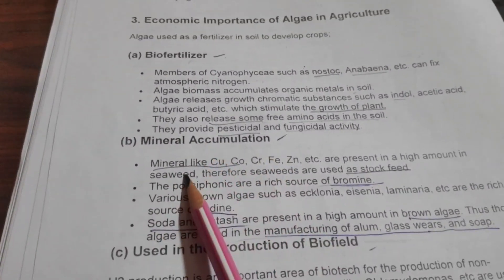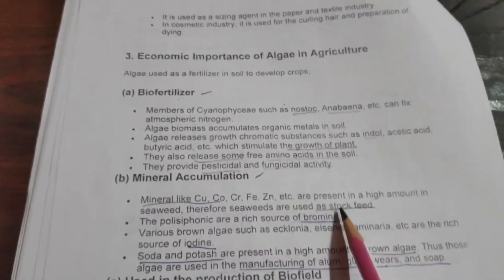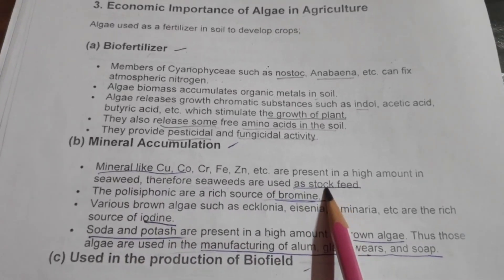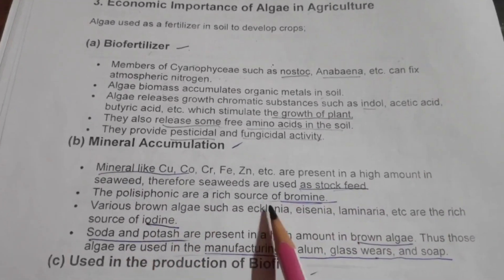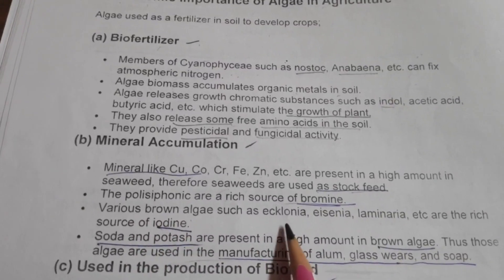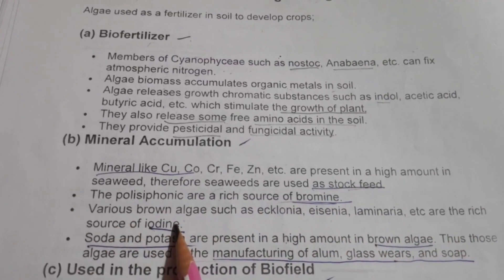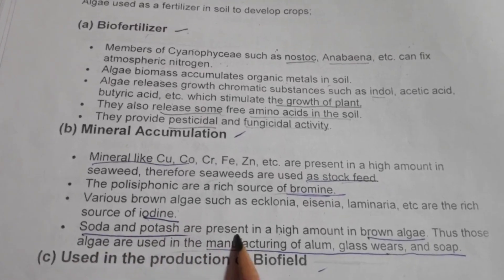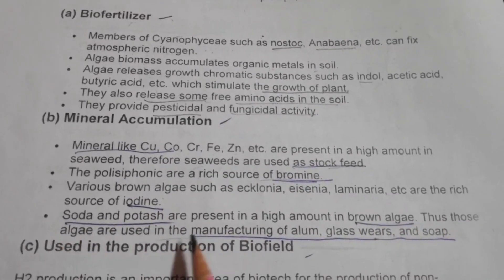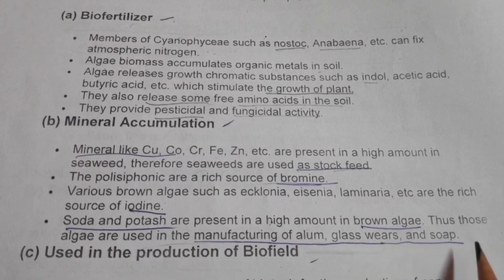Mineral accumulation: Minerals like copper, cobalt, chromium, iron, and zinc are present in high amounts in seaweeds, so seaweeds are used as stock feed. They are a rich source of bromine. Various brown algae such as Ecklonia, Eisenia, and Laminaria are rich sources of iodine. Soda and potash are present in high amounts in brown algae, so those algae are used in the manufacturing of alum, glass, and soap.